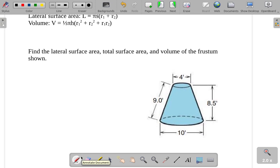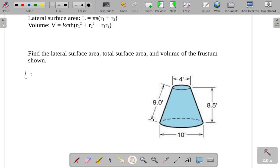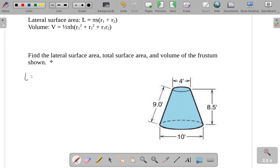If I want to find the lateral surface area, total surface area, and volume of this frustum shown, let's go to the lateral surface area. Pulling from the formula right up here, the lateral surface area is pi times s times the sum of my two radii. It looks like this upper circle has a radius of 2 feet. This lower circle has a radius of 5 feet.